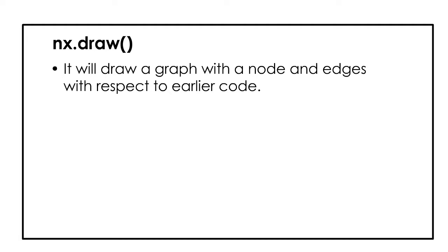NX dot draw. It will draw a graph with a node and edges with respect to earlier code. And this graph will be the final outcome of the code.